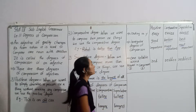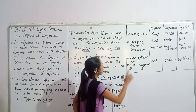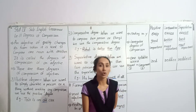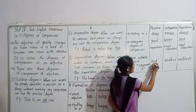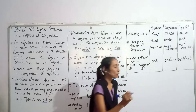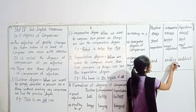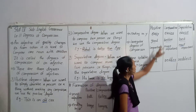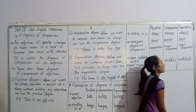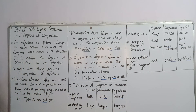Now next: one syllable words. Agar koi word ek vowel aur ek consonant se end ho raha hai — jaise 'red' — ith has one vowel and one consonant at the end, so the last consonant is doubled. So comparative degree is 'redder' and superlative degree is 'reddest'. So these are the rules for positive, comparative, and superlative degrees.